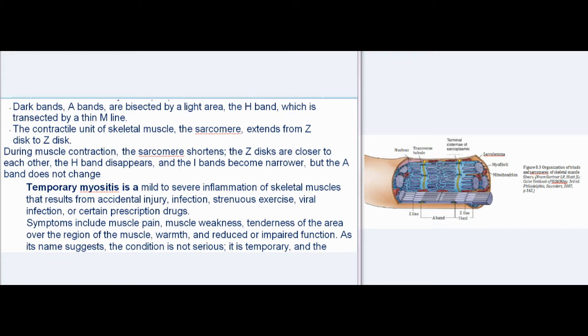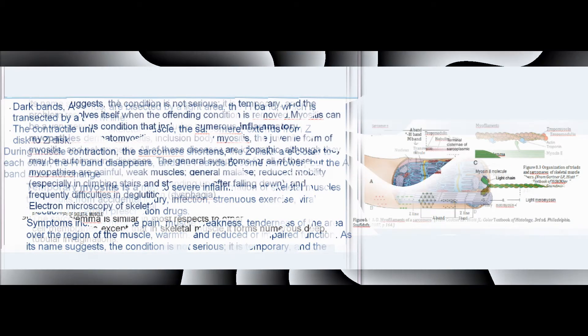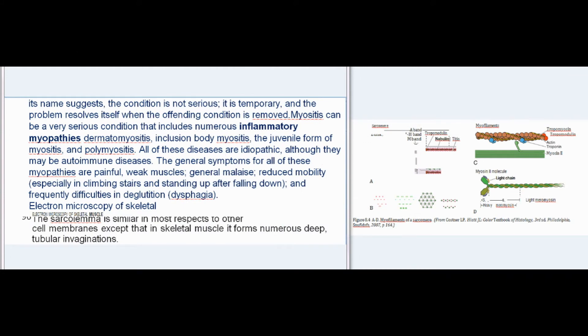Temporary myositis is a mild to severe inflammation of skeletal muscles that results from accidental injury, infection, strenuous exercise, viral infection, or certain prescription drugs. Symptoms include muscle pain, muscle weakness, tenderness over the region of the muscle, warmth, and reduced or impaired function. As its name suggests, the condition is not serious; it is temporary, and the problem resolves itself when the offending condition is removed.